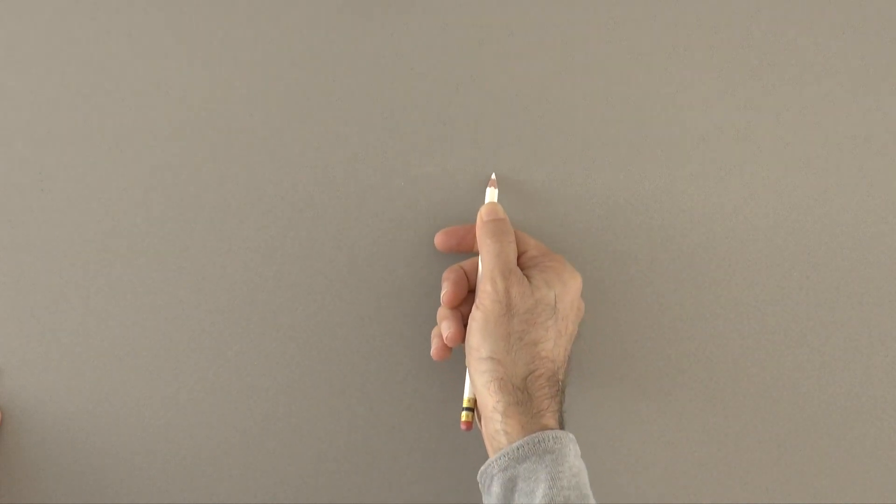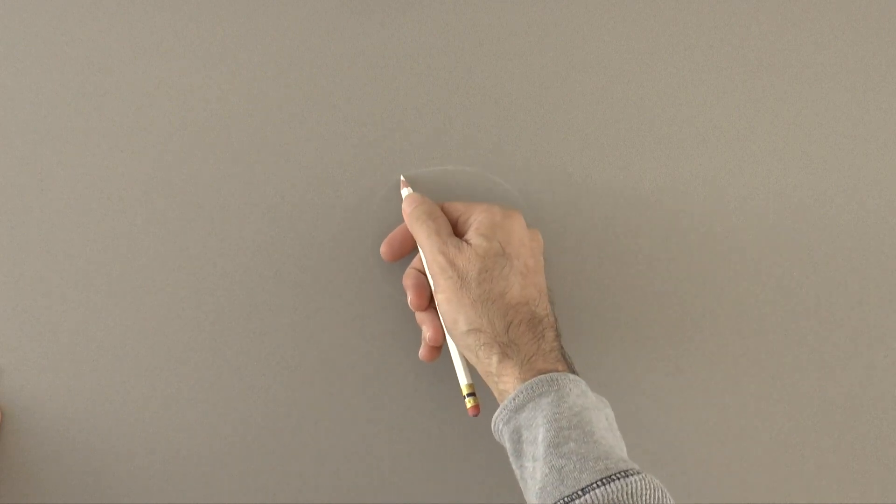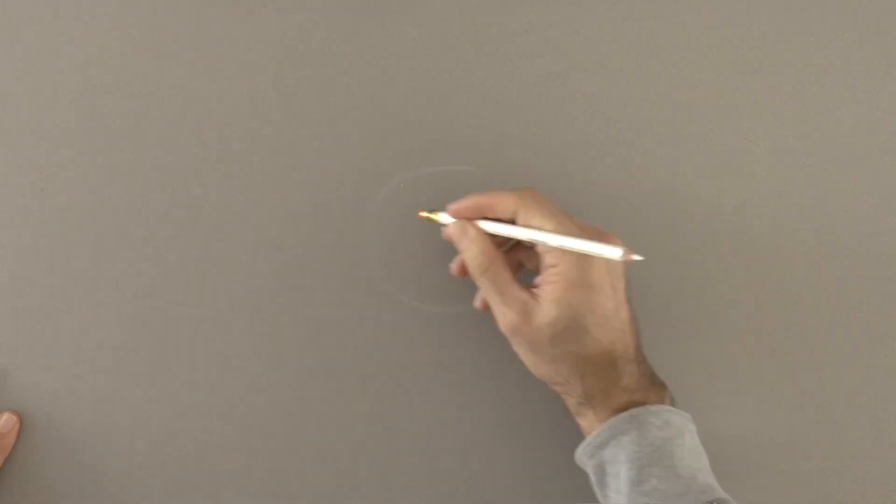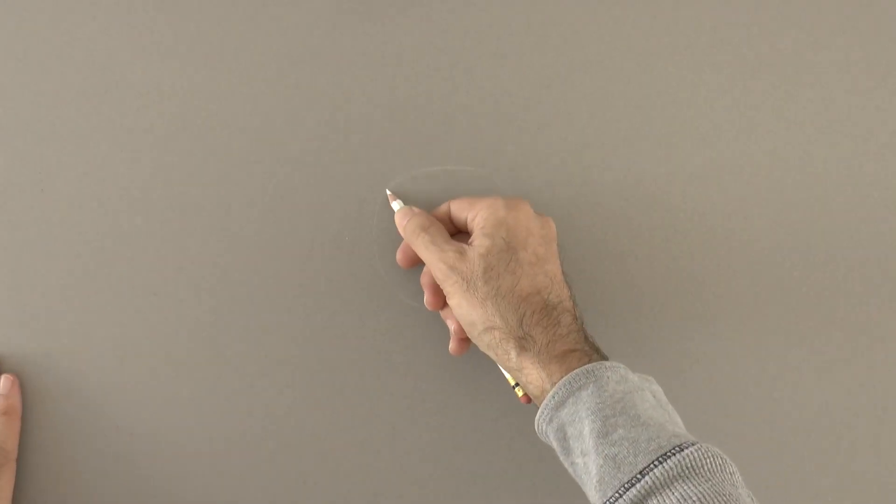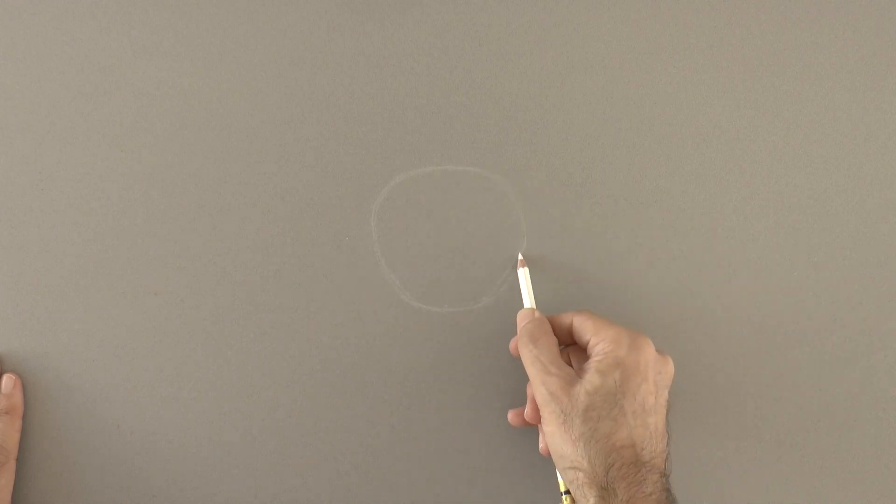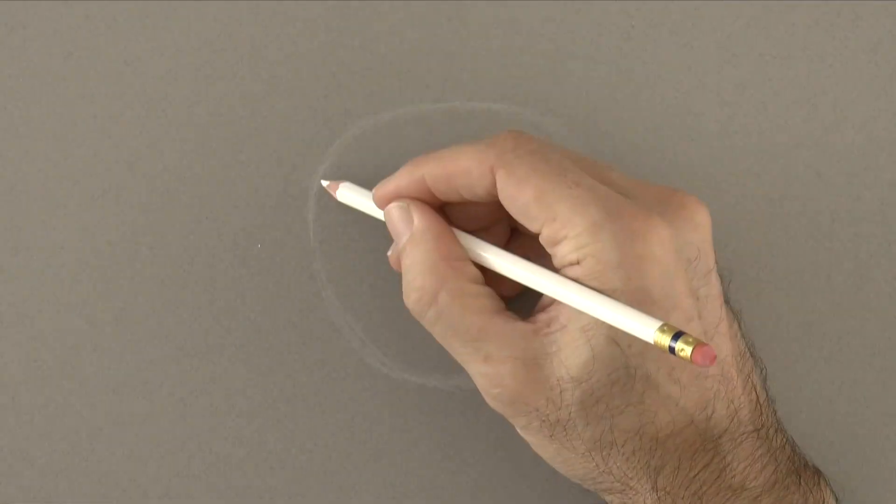First we mark the size and then we sketch the outline with loose strokes. We correct anything as needed and reinforce our line. I am drawing with a white pencil that can be erased on gray paper.